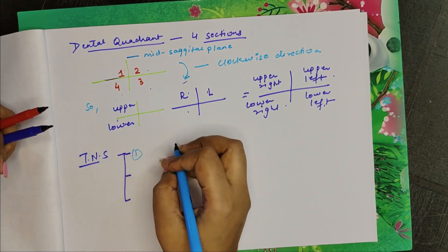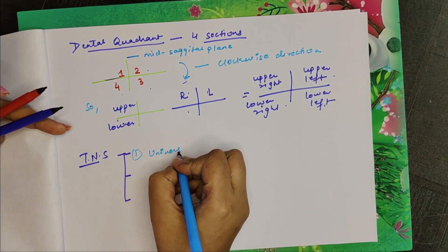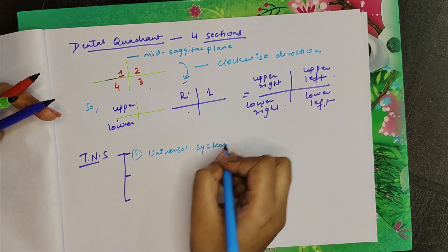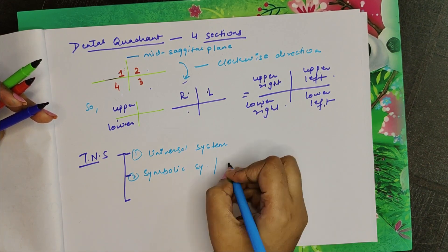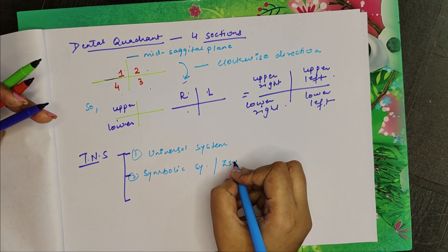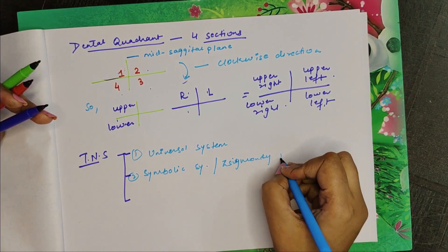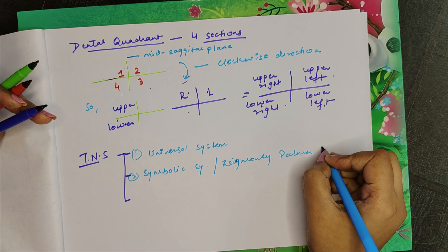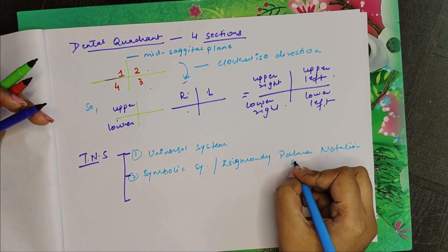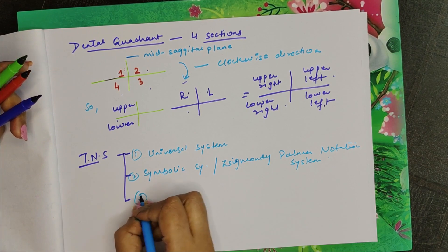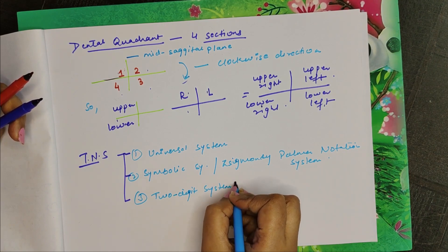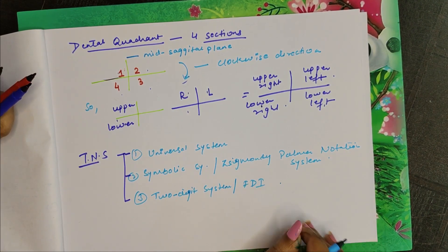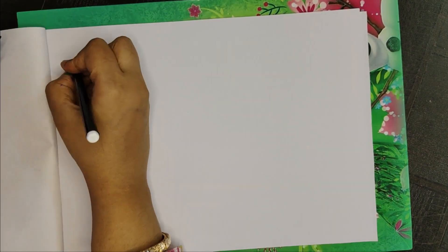The tooth numbering system is divided into three sections. First, we have the Universal System. Second is the Symbolic System, also called the Zsygmondy-Palmer Notation System. Third is the Two-Digit System, or FDI System — FDI stands for Federation Dentaire Internationale.